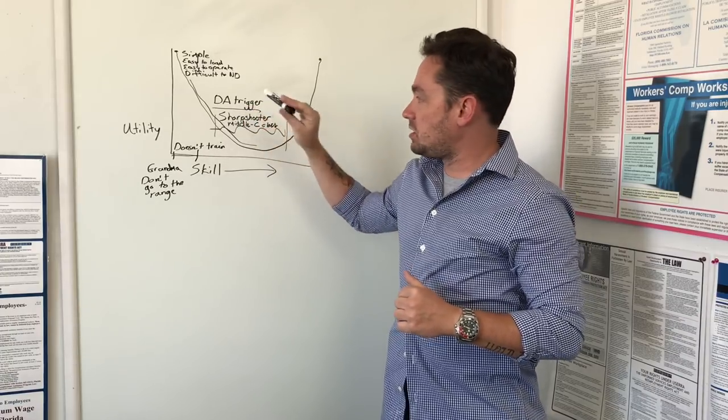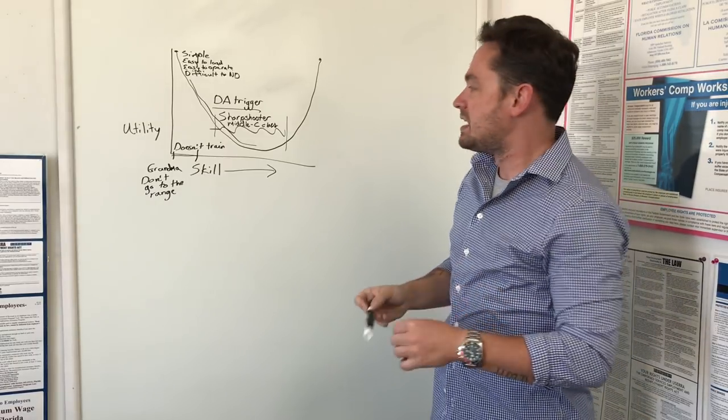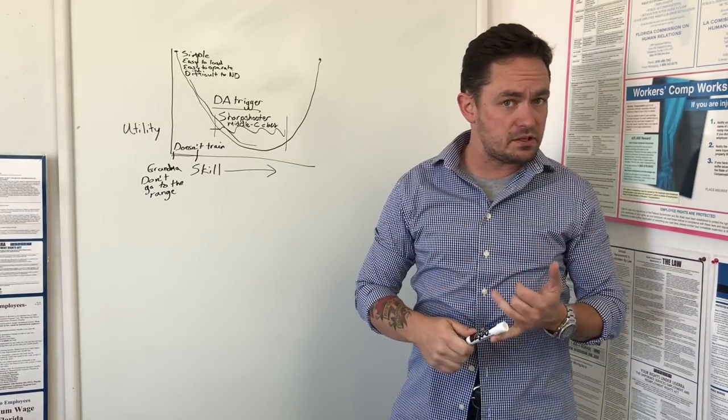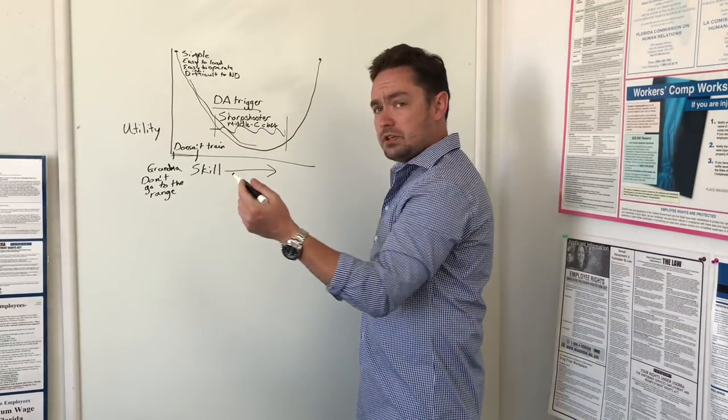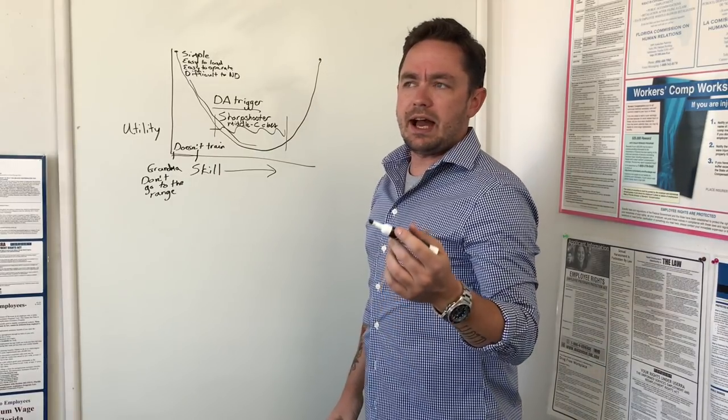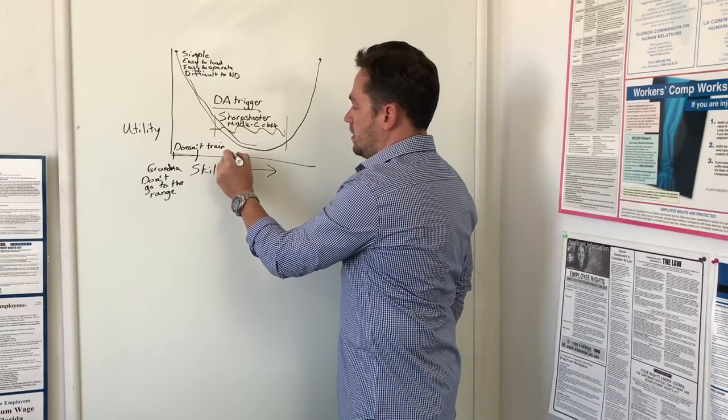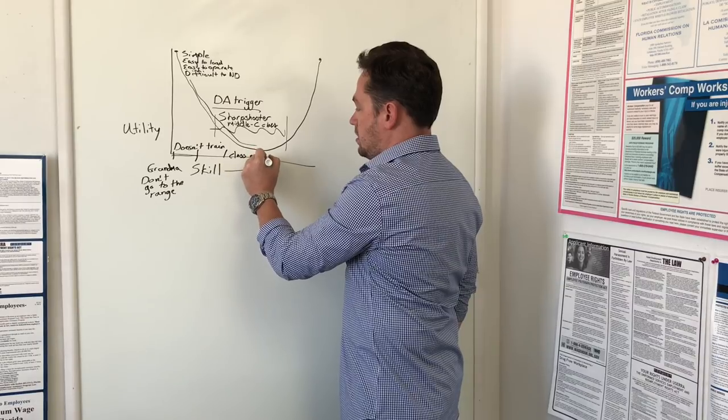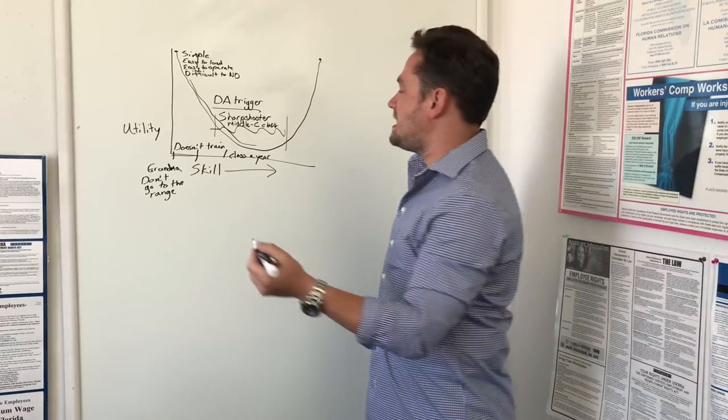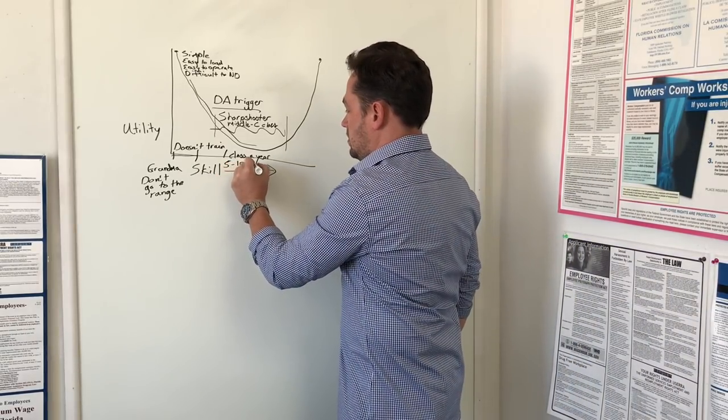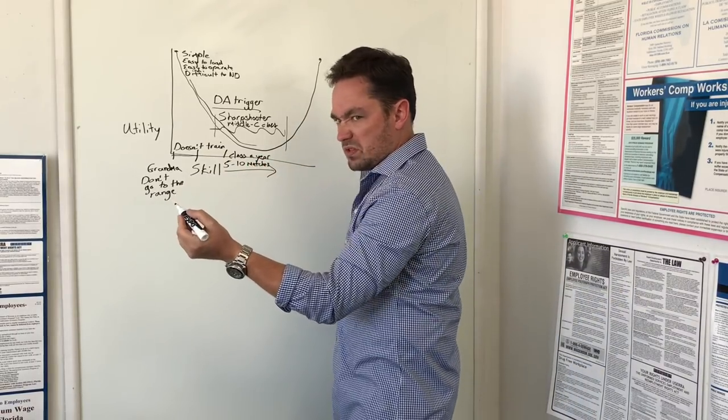So sharpshooter IDPA shooter, kind of a middle C class USPSA shooter. This is where this DA trigger management and managing a DA trigger while firing rapidly becomes a real problem for these people. These guys are going to select away from small double action revolvers for personal defense because they get much better return on their training investment with something like a Glock 43 or an M&P Shield. Because let's say you take a good shooting class every couple of years. So you take one class a year and shoot five to ten matches, and maybe you dry fire three times a month.